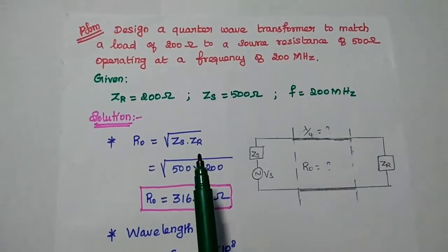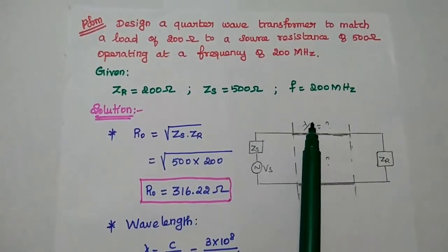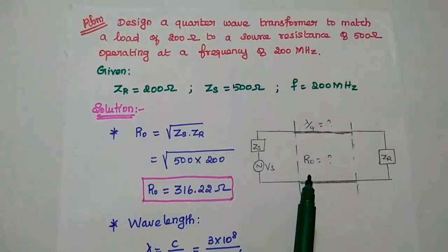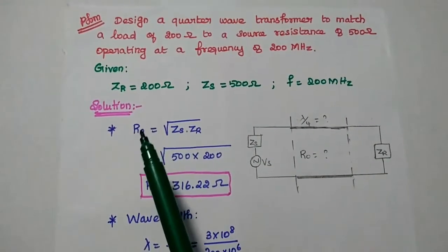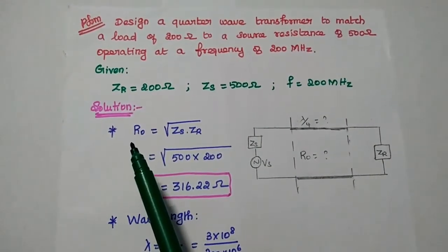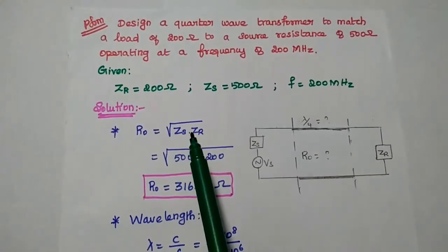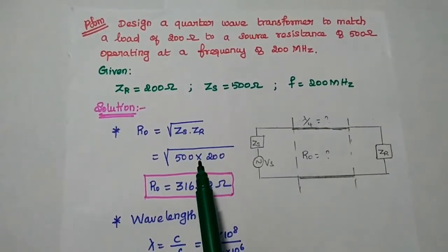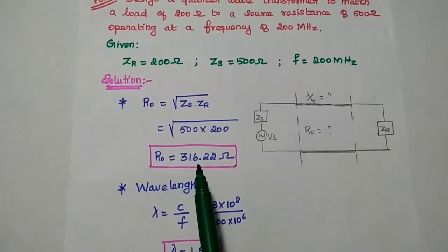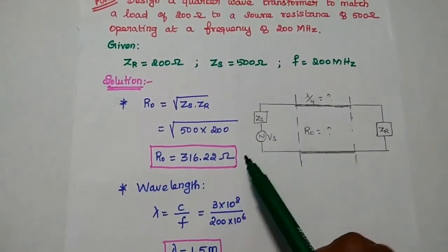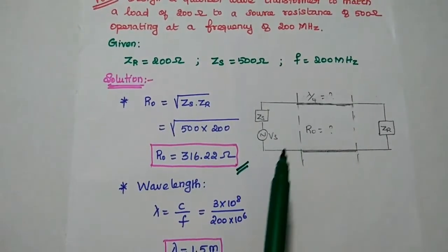We are going to design a quarter wave transformer, so we have to find out the value of lambda by 4 and its characteristic impedance. For this quarter wave transformer, the characteristic impedance formula is R0 is equal to square root of ZS into ZR. Substituting the values, we get the characteristic impedance value as 316.22 ohm.